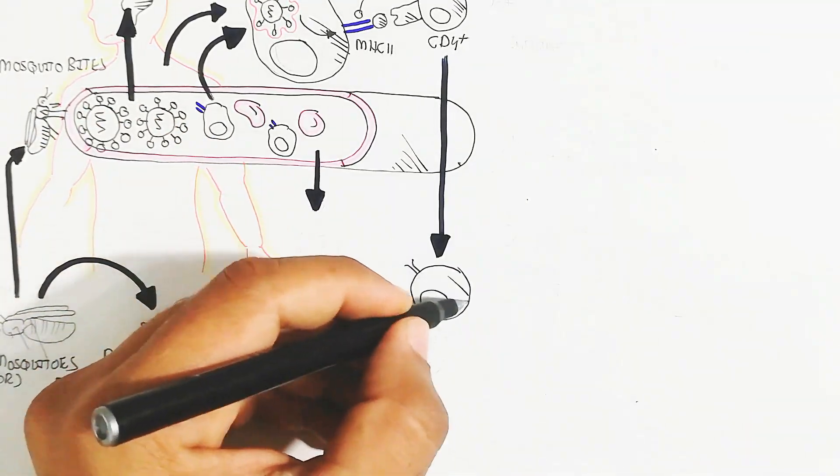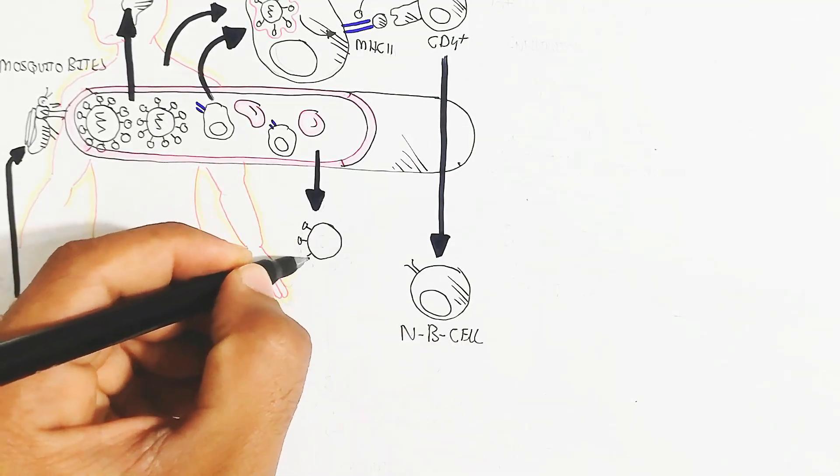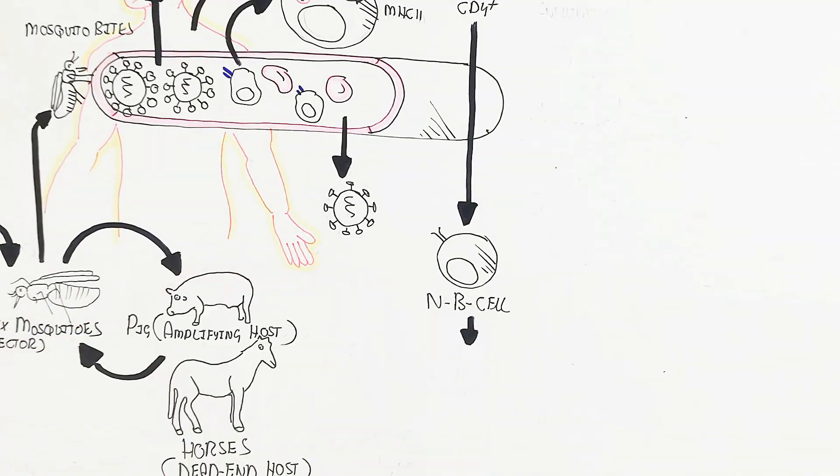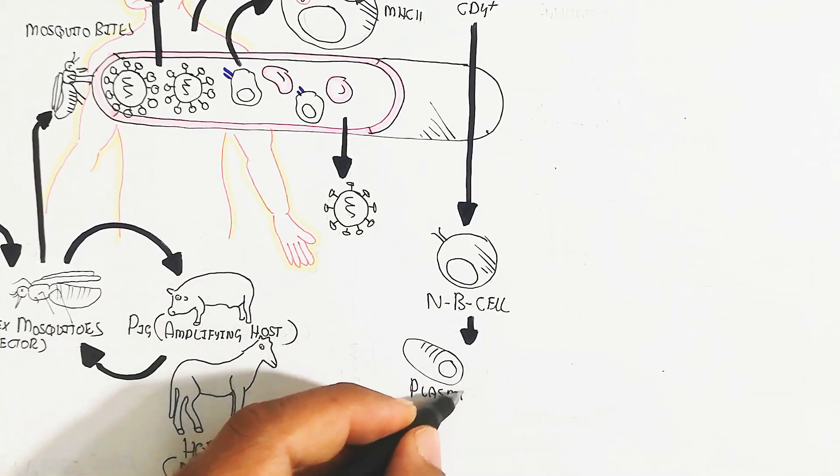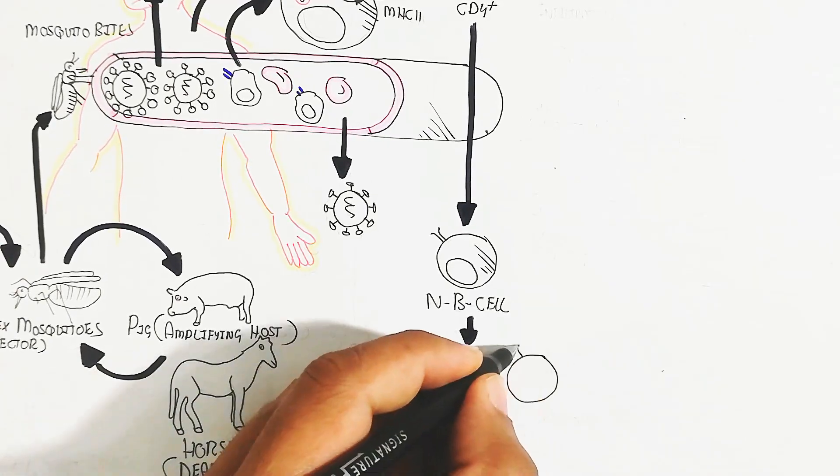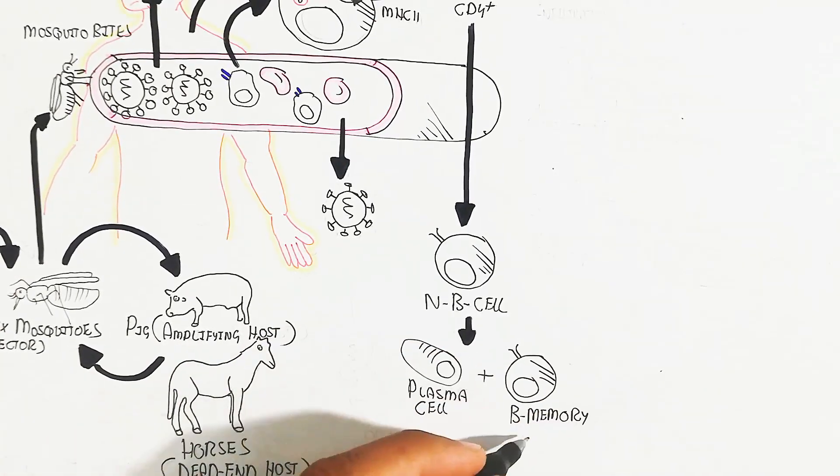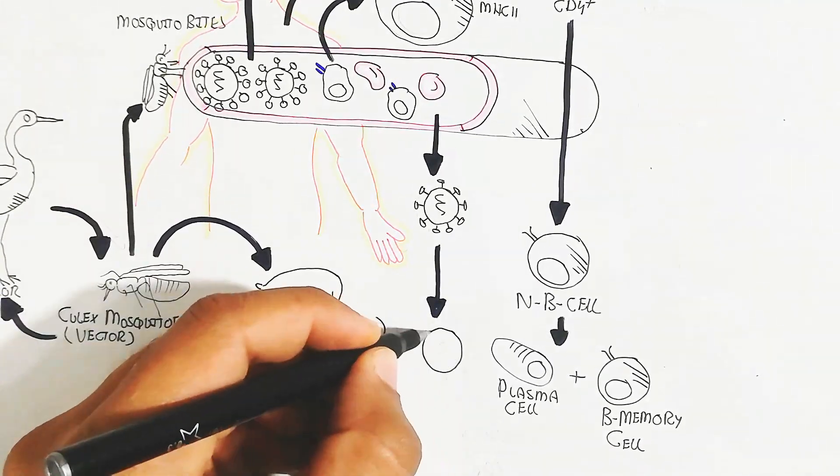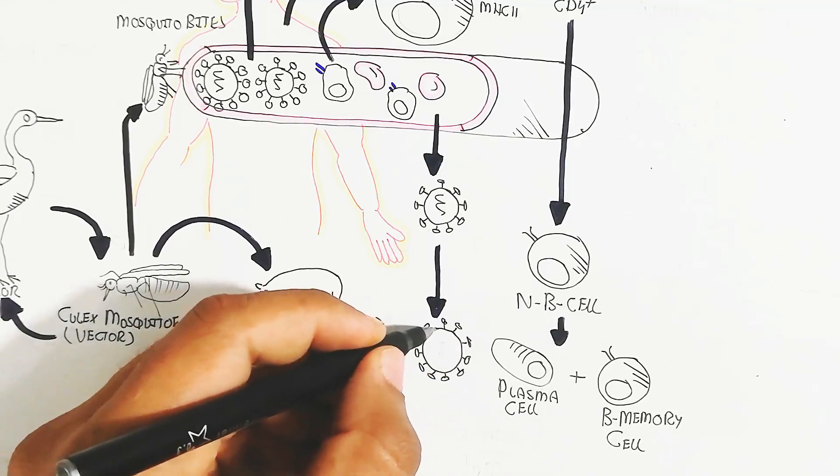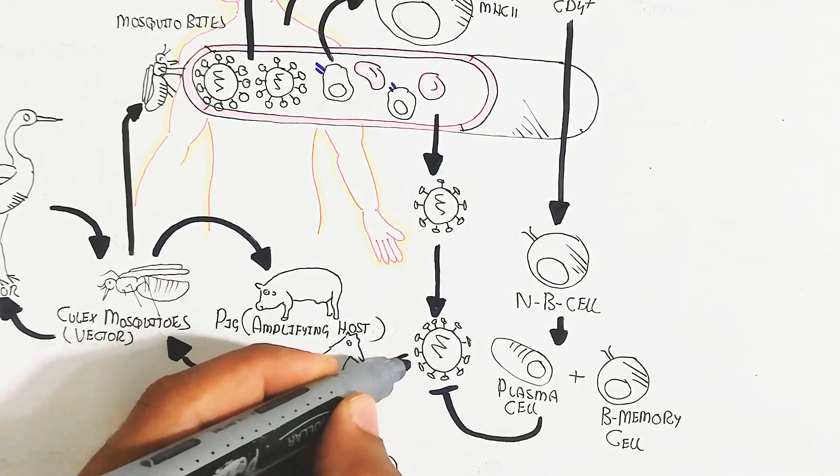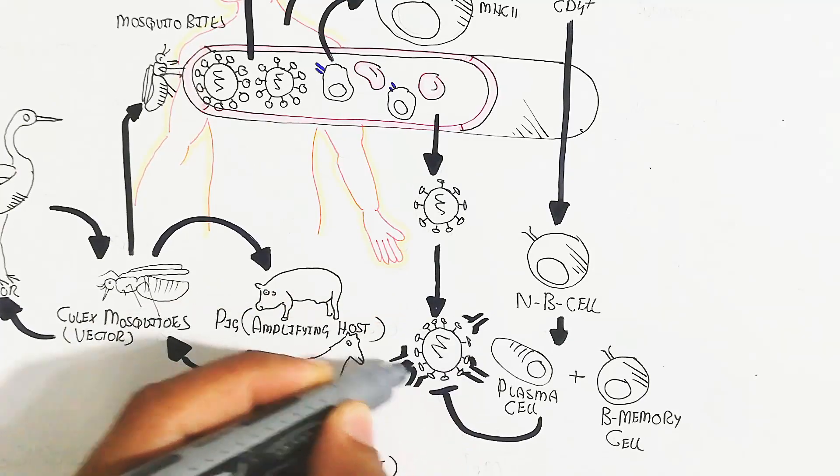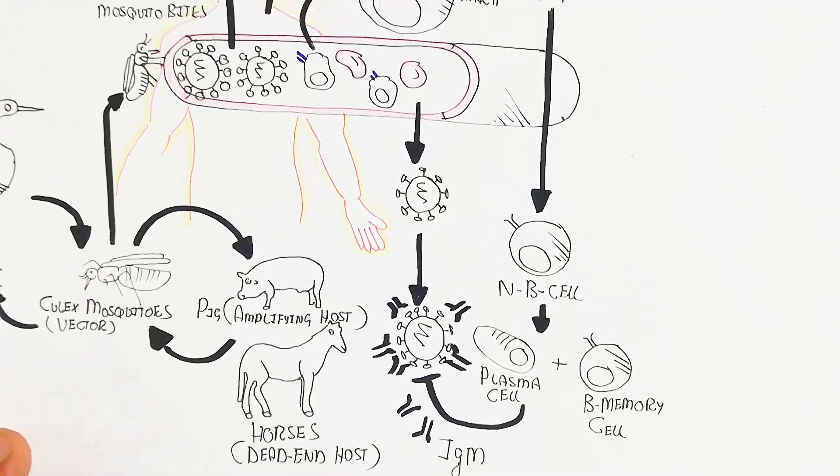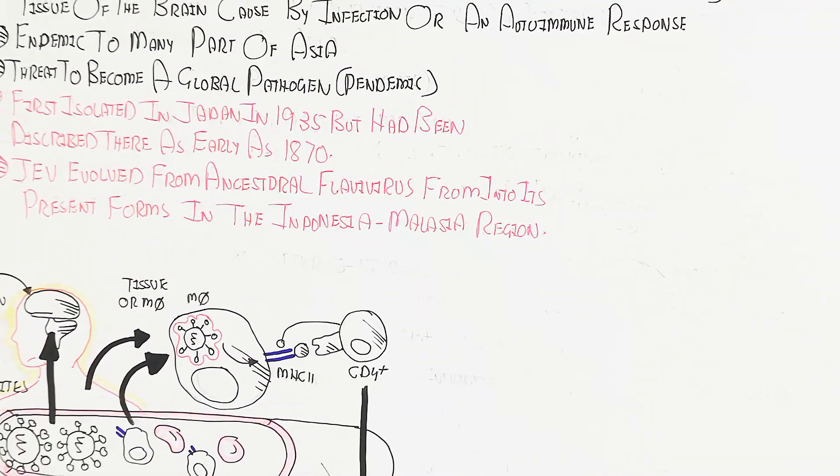The antigen enters the lymphatic system where naive B cells recognize it through antigen presentation by CD4 helper cells, proliferating into plasma cells and B memory cells. This is important for clearance of pathogenicity. IgM antibody, the specific antibody produced against this virus, will clear it through opsonization, leading to complement system activation and macrophage activation to clear early pathogenic activity.